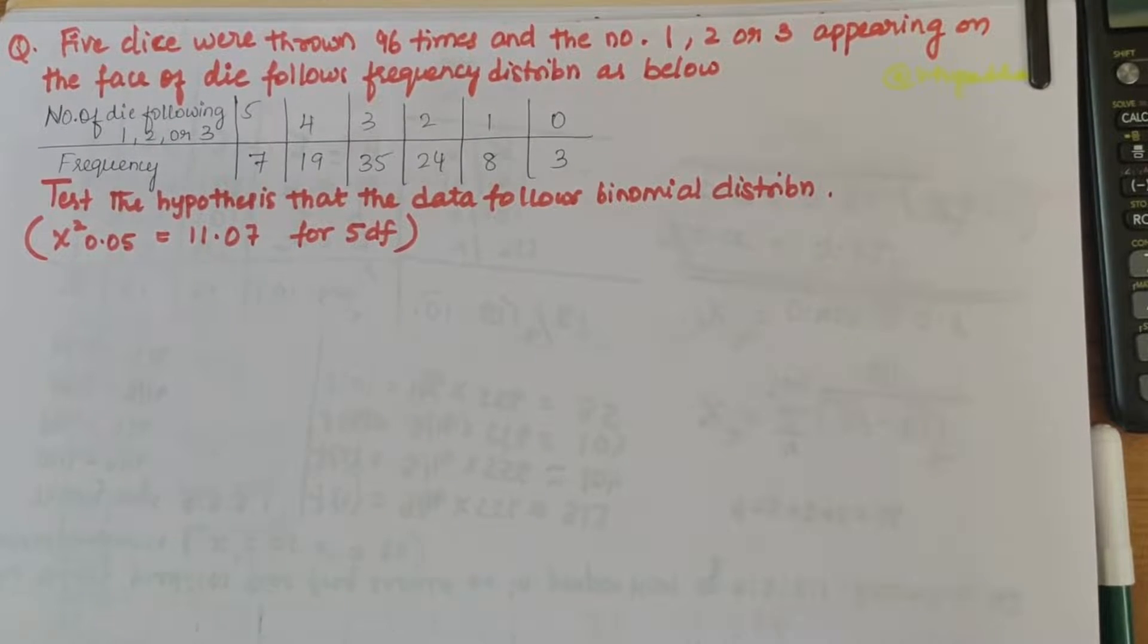In this video we'll be solving a numerical related to the chi-square distribution. The problem statement says that five dice were thrown 96 times and the number 1, 2, and 3 appearing on the face of die follows the frequency distribution. The table is given here.